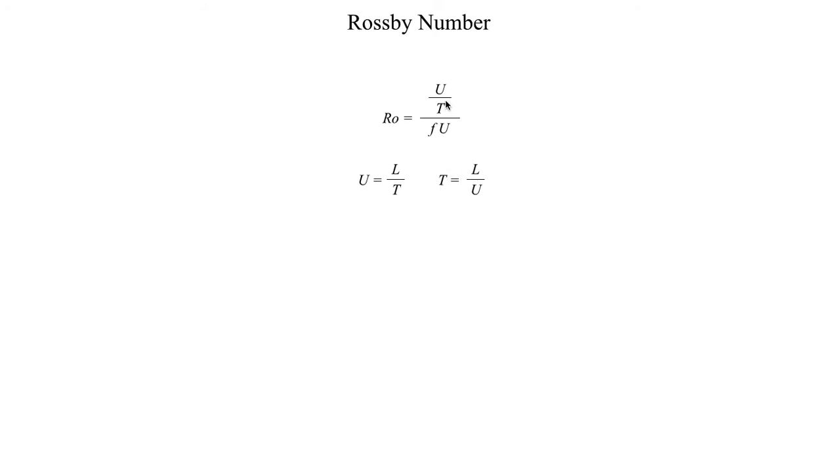If we take that expression for T and substitute it for this T in the equation for Rossby number, we get that the Rossby number is equal to U squared over L, all divided by f times U. If you simplify that down, you get that the Rossby number equals the horizontal wind speed U divided by Coriolis parameter times the characteristic horizontal length scale. This is the most commonly encountered Rossby number definition that you will see when you're going through a course of meteorology.